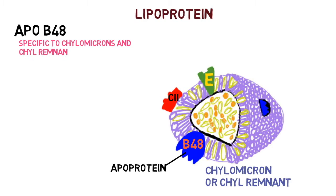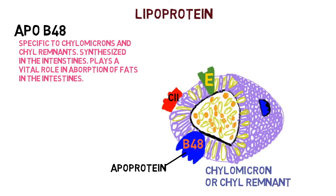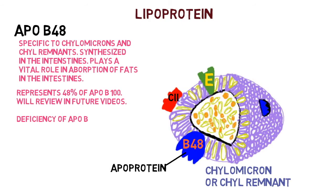Apoprotein B48 is specific to chylomicrons and chylomicron remnants. It's synthesized in the intestines and plays a vital role in the absorption of fats in the intestines — it sits there waiting for fats to come by. It represents 48 percent of ApoB100, which we'll review in the future.